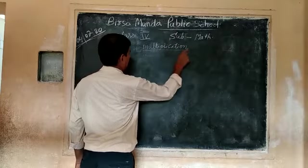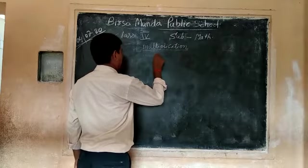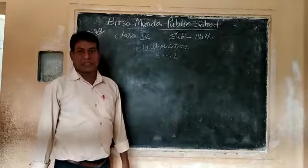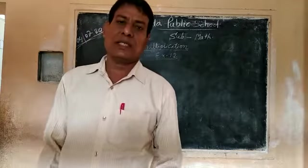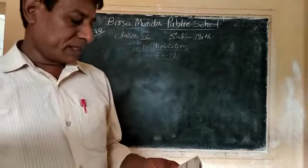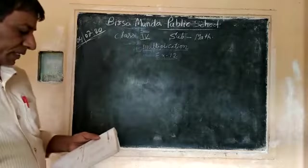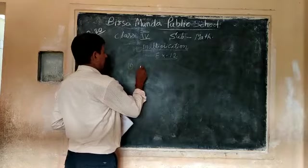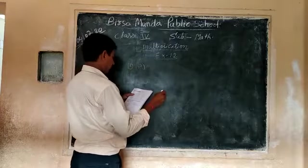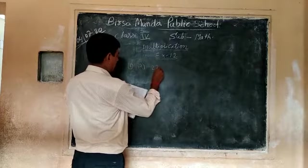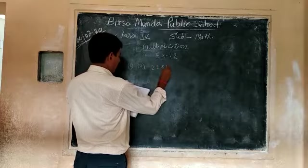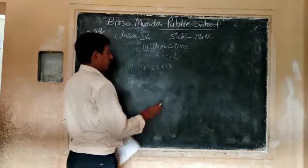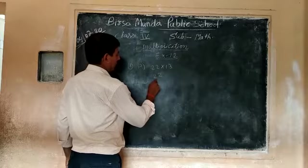Multiplication. This exercise has two digits multiplication. We have 22 into 32. Now, we have 22 into 32.